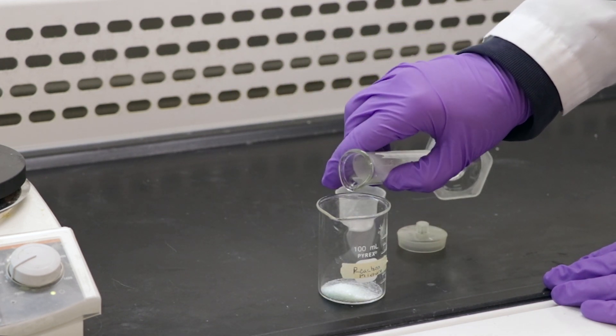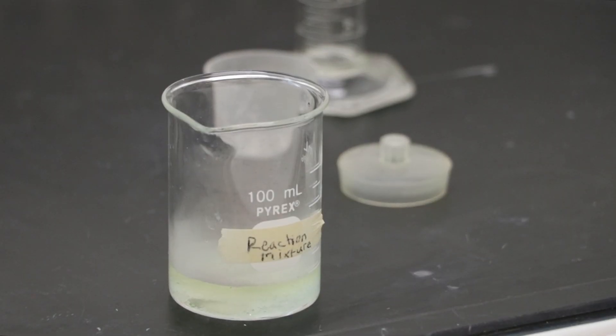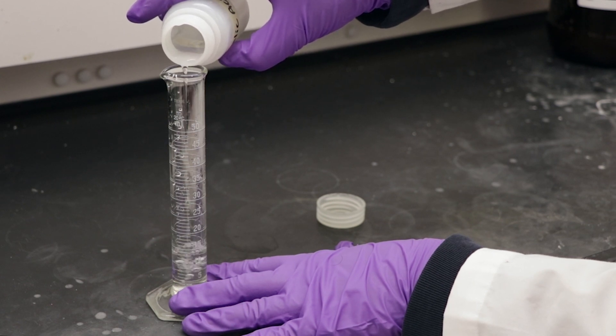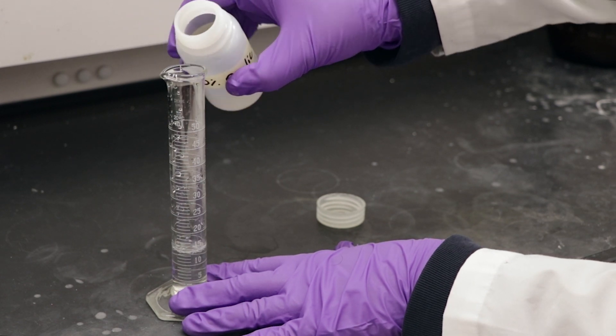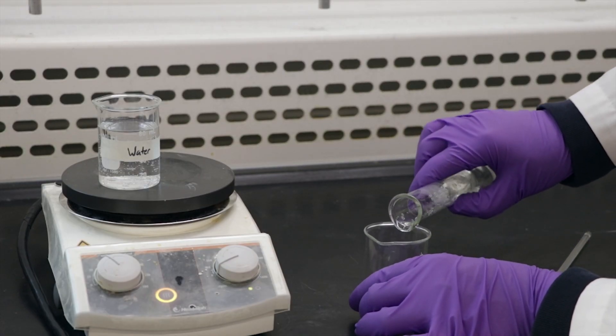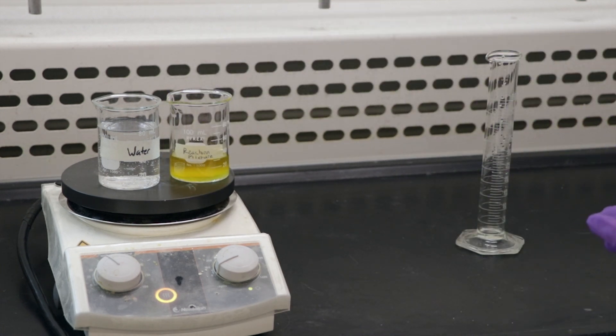If the solid doesn't dissolve, stir the solution. Go to the TA fume hood and measure out 15 ml of oxalic acid. Cover the solution and take it back to your fume hood. Gently add the oxalic acid to your reaction mixture. Place it on the hot plate and stir the solution.